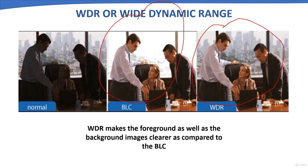WDR refers to the ratio between the lightest and darkest elements of an image. Cameras that have WDR have two image sensors — one for high-speed and another for low-speed video capture. They work together and provide a balanced image where both the foreground and background are more clear, as compared to BLC.